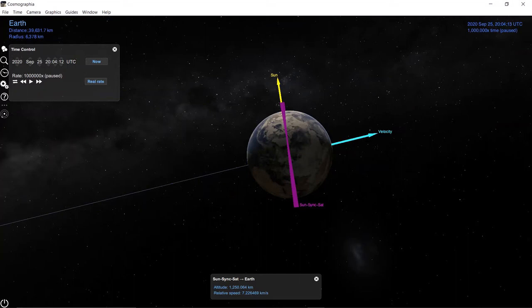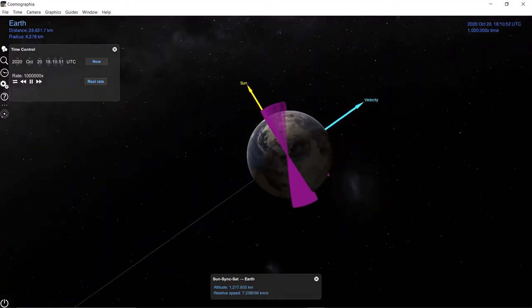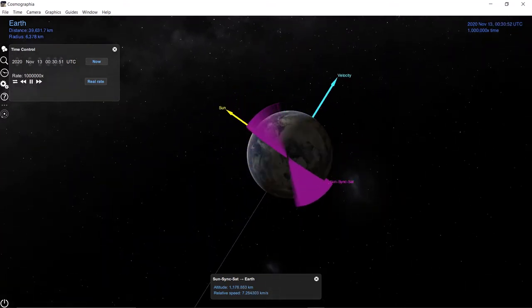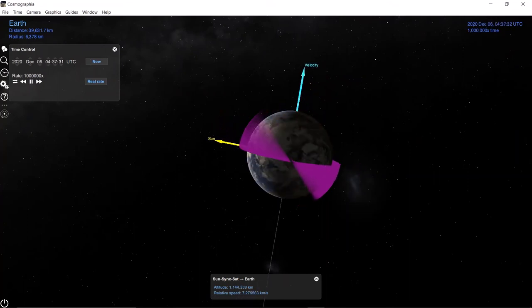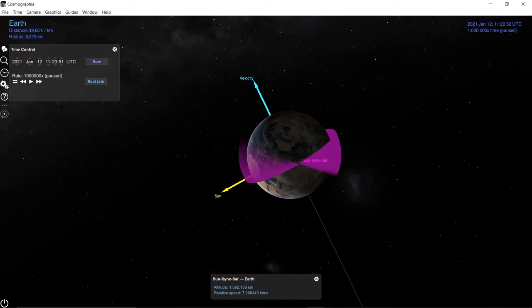The velocity vector and the sun vector are close to perpendicular to each other. And we can see this in animation here. As Earth is going around the sun, the velocity vector is rotating, the orbital plane is rotating, and then the sun vector with respect to the Earth is all rotating. And they're all rotating at the same rate because we are in a sun-synchronous orbit, and we chose the orbital parameters to be in this orientation.